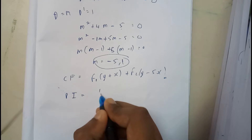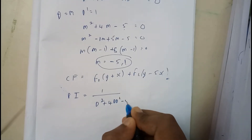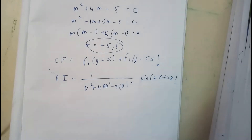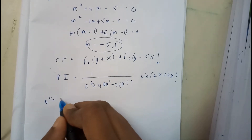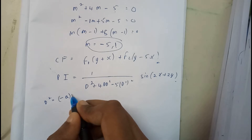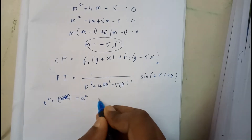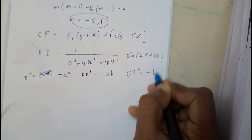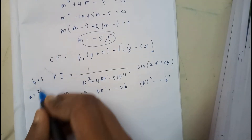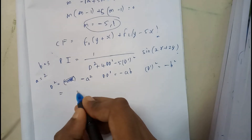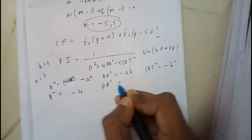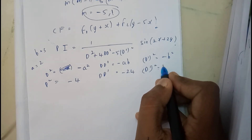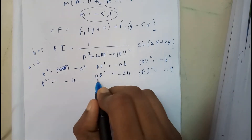The particular integral is 1/(D² + 4DD' − 5D'²) into sin(2x + 3y). Here a = 2 and b = 3. Substituting: D² = −a² = −4, DD' = −ab = −6, and D'² = −b² = −9.